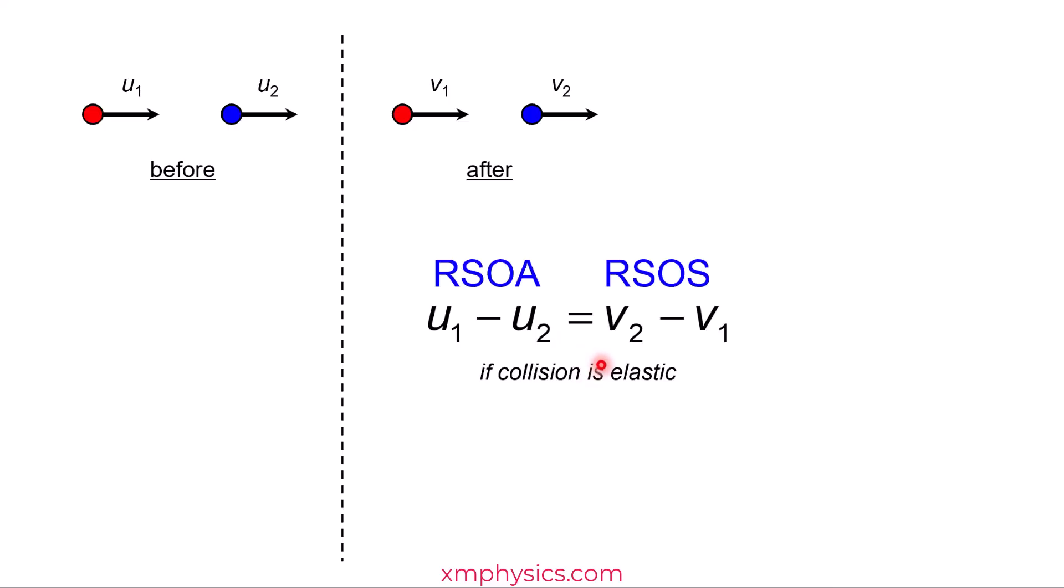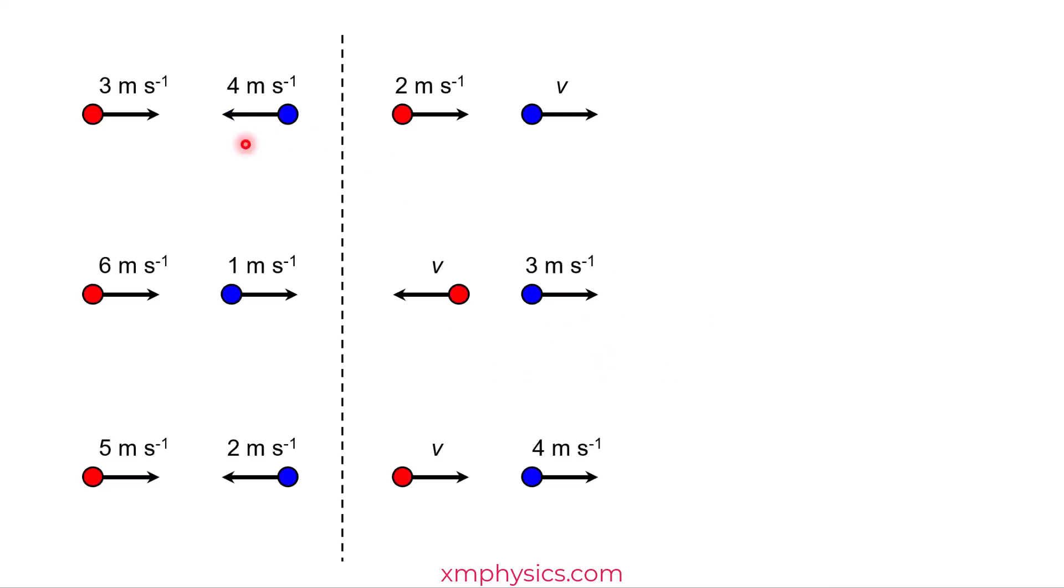I think a numerical example should be more useful. So let's take this one as an example. Remember how we apply the RSOA equals RSOS formula for this collision. You've got to do this minus that equals that minus this. So 3 minus negative 4, because it's left-hand, equals V minus 2. So do the math. V is 9 meters per second.